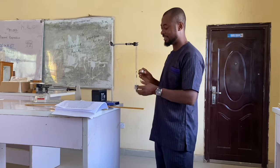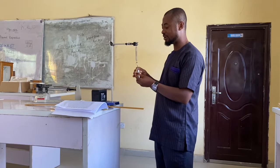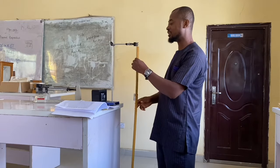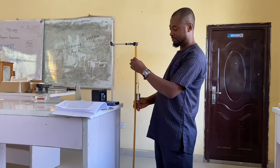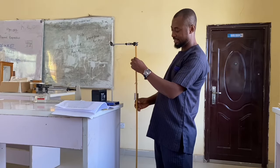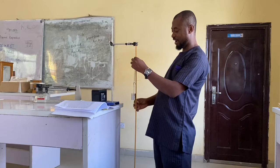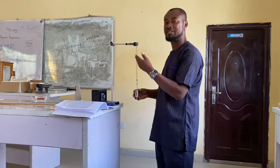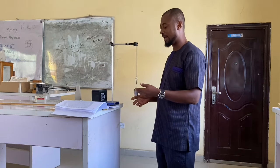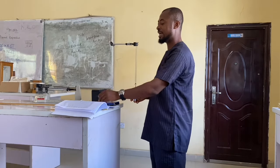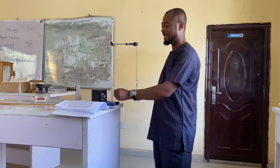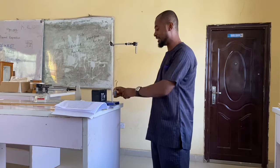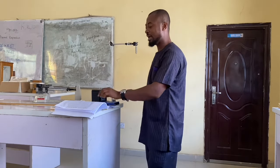I will now hang the third mass which is 300 grams and take my extension again, which is giving me 25.4. I will now take the time for another 20 oscillations. Then I add the fourth mass which is 400 grams, then the fifth mass which is 500 grams, repeating the time for oscillations each time.